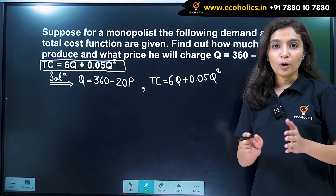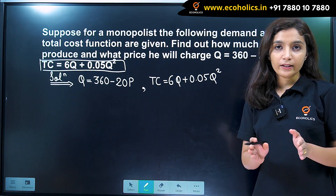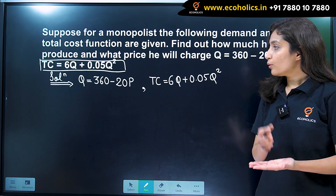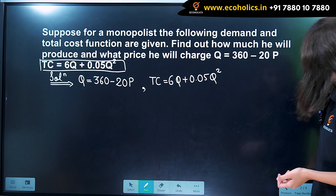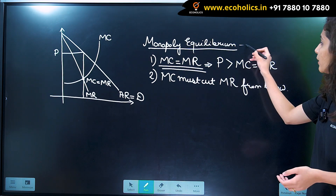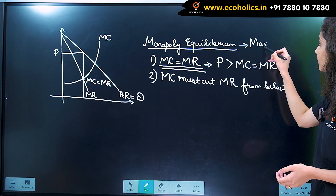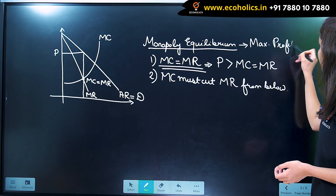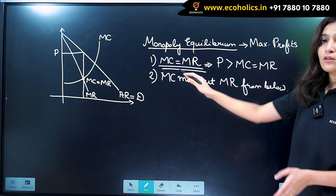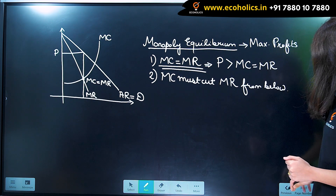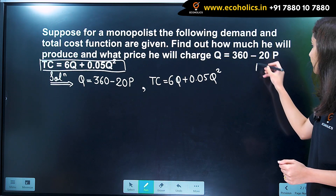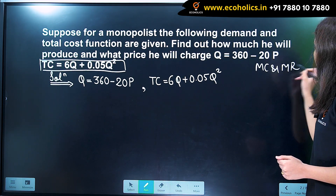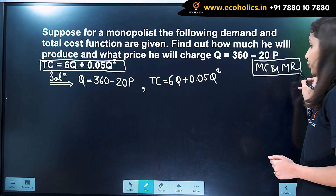The monopolist will produce the output at which he earns maximum profit. We have seen that the condition for maximum profit is MC should be equal to MR. So we need to find MC and MR.